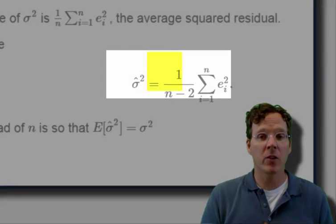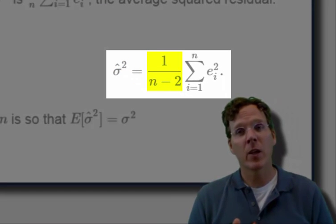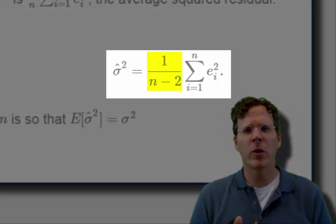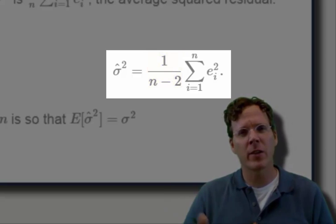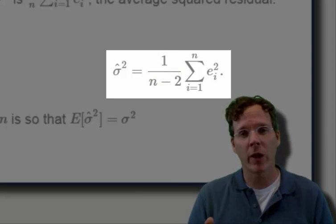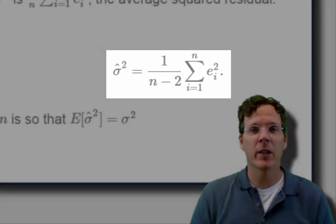Now most people use n minus 2 instead of n, so it's not the average squared residual. It's kind of like the average squared residual. So for large n, the difference between 1 over n minus 2 and 1 over n is irrelevant, but for small n, it can make a difference.